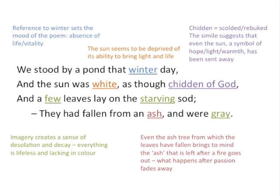The reference to the tree is also significant: 'They had fallen from an ash and were grey.' It's not just any tree — it's an ash tree. That word ash brings to mind the ash left after a fire goes out, which is perhaps what happens after passion fades away. And of course, ash is also grey, adding to this idea of the colourless nature of the poem.